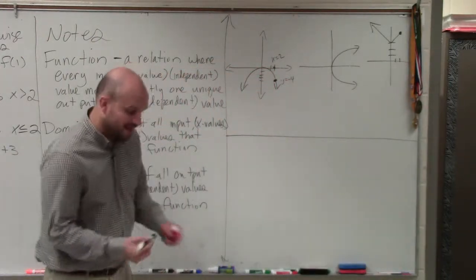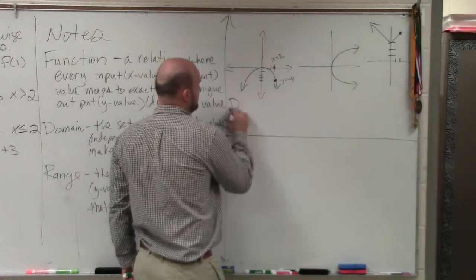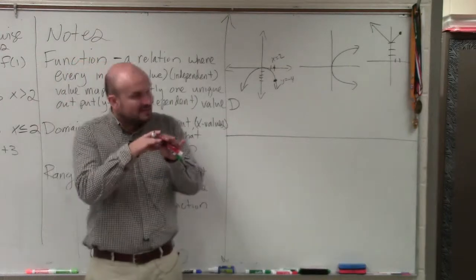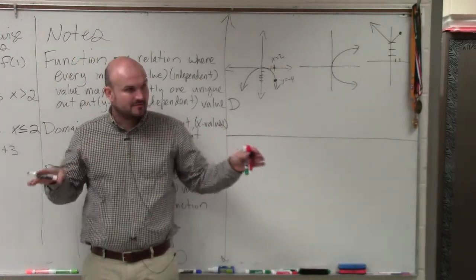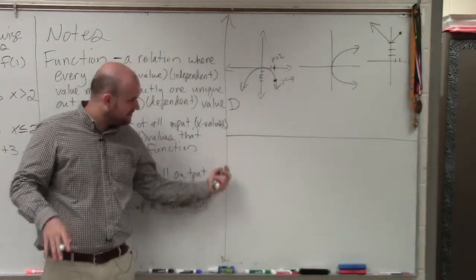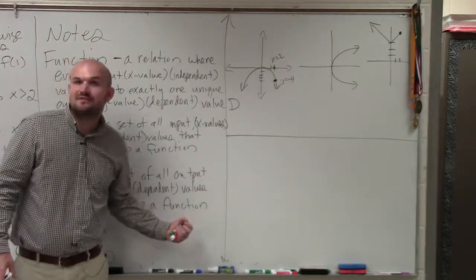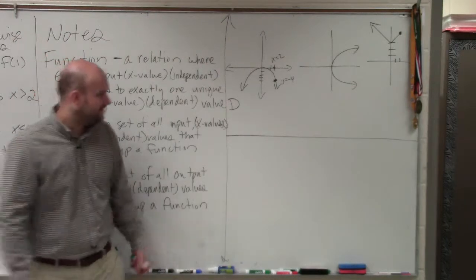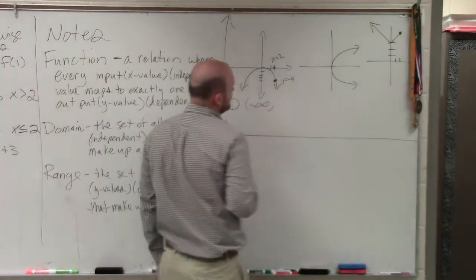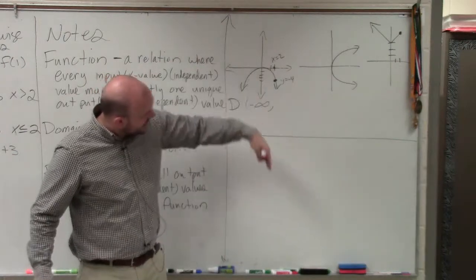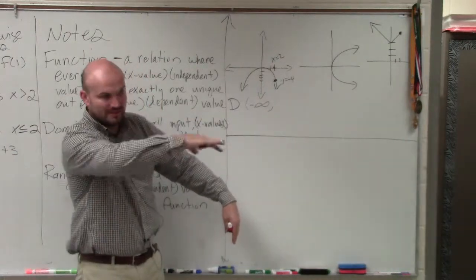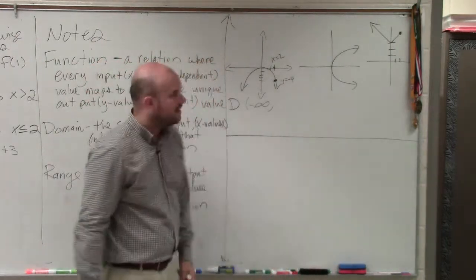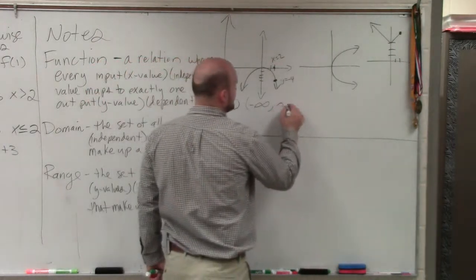Now to determine the domain and range. The domain is the set of all x values. As you guys look at this graph, you can see that this graph keeps on expanding. As this graph goes down, it's going to keep on going to the left, and as it keeps on going to the left it's eventually going to approach negative infinity. So we can say negative infinity. And then as this graph goes down, but remember we're dealing with x which is left and right, as the graph goes down it's going to continue going to the right, which will take it to positive infinity.